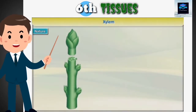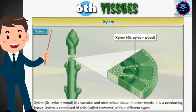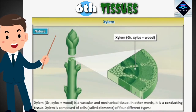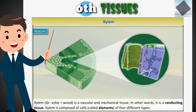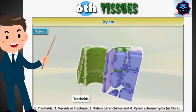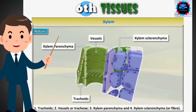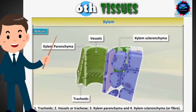Xylem — from the Greek word 'xylos' meaning wood — is a vascular and mechanical tissue; in other words, it is a conducting tissue. Xylem is composed of cells called elements of four different types: tracheids, vessels or tracheae, xylem parenchyma, and xylem sclerenchyma, or fiber.